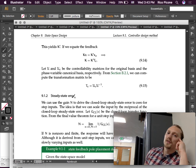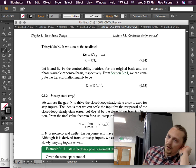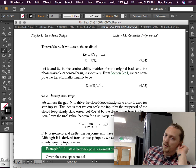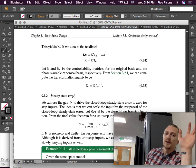Now, let U and UC be the controllability matrices for the original basis and the phase variable canonical basis, respectively. From section, the one that we did on the controllability, we can compute the transformation matrix to be UC, UC, U inverse. So, we now have everything that we need.